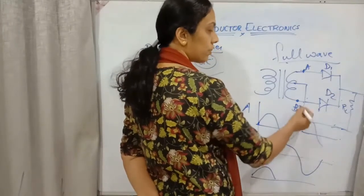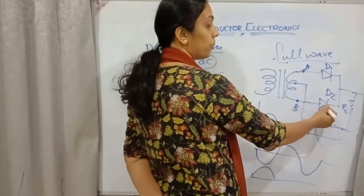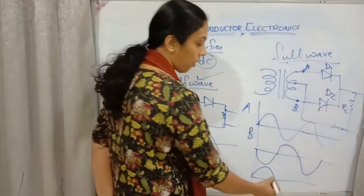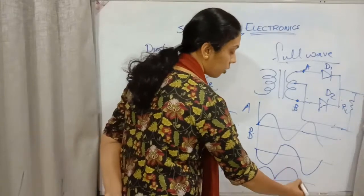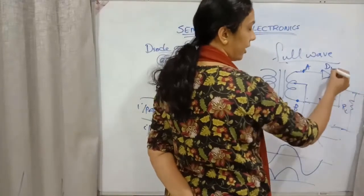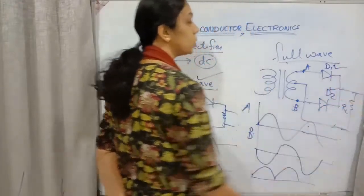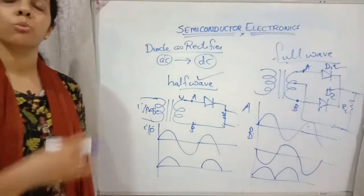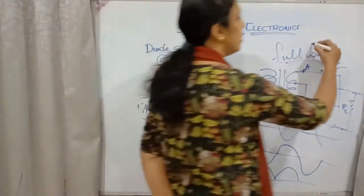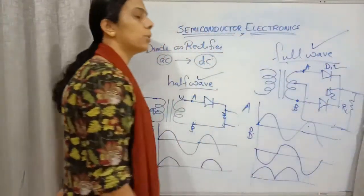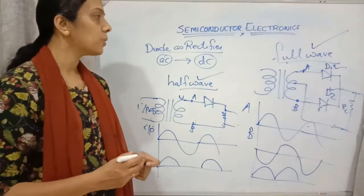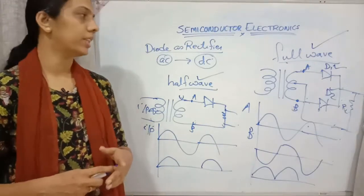At the same time, B is under forward bias, so current passes through D2 and we get an output. Then A gives its output again. So from either D1 or D2, we are always getting output — both halves are getting rectified. That is called a full wave rectifier, using the center tap method.